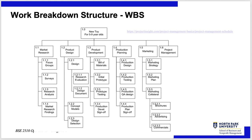Here's an example WBS. The project is to make a new toy for five-to-nine-year-olds. At the top level, you do market research, product design, product development, production planning, marketing, and project management. At the next level — the first decimal place — you break each of those down. For example, product design breaks into focus groups, design, bill of materials, production design, and marketing strategy. You could argue for more or fewer categories, but this gives you the structure. Each of those top-level items could be a mini project.